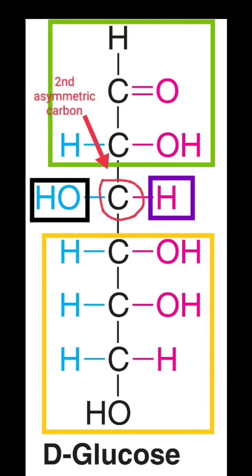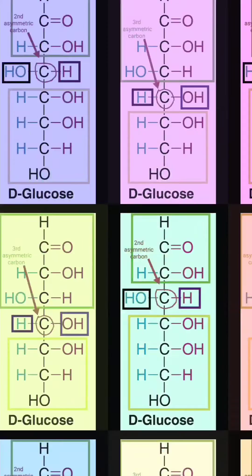The third carbon is also asymmetric, making it the second asymmetric carbon atom. The above part — that is the first and second carbons of glucose — is one group, OH is one group, hydrogen is one group, and the remaining part below the third carbon is one group. So the third carbon is bonded to four different groups, and that is why it is called an asymmetric carbon atom.